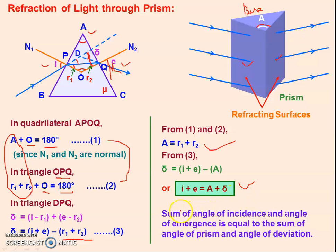You can write this in statement form: the sum of the angle of incidence and the angle of emergence is equal to the sum of the angle of prism A and the angle of deviation δ. This is the condition of refraction through a prism.